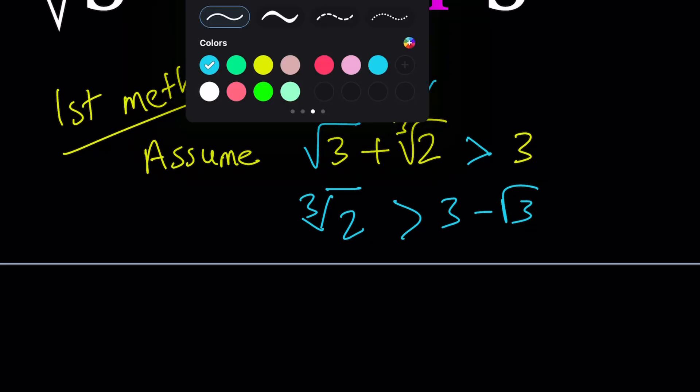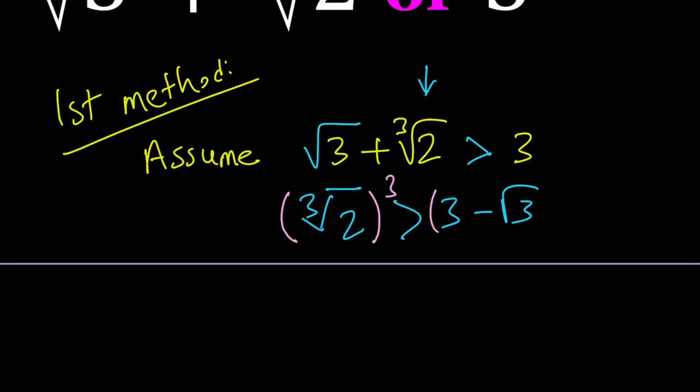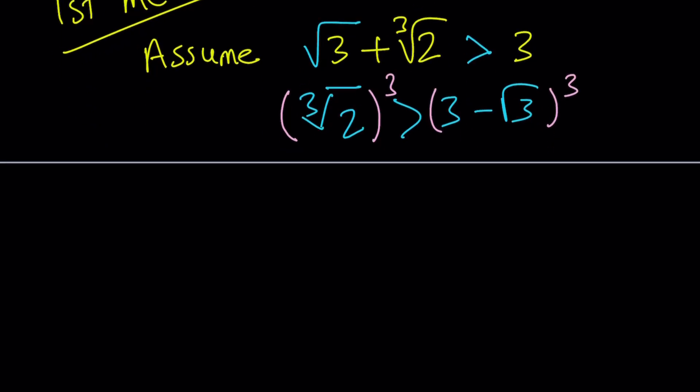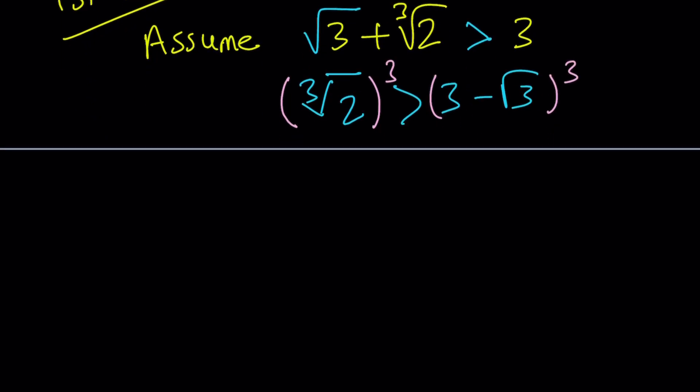That is much more meaningful. So, we're going to cube both sides. And then the left-hand side, obviously, is going to be an integer. So, we're going to get 2 is greater than.